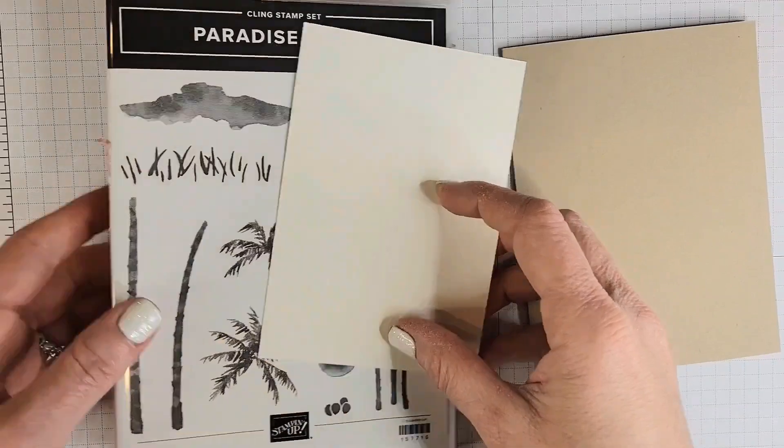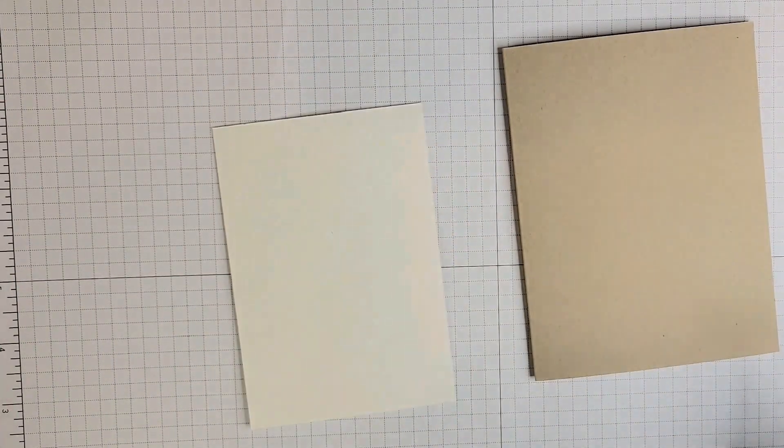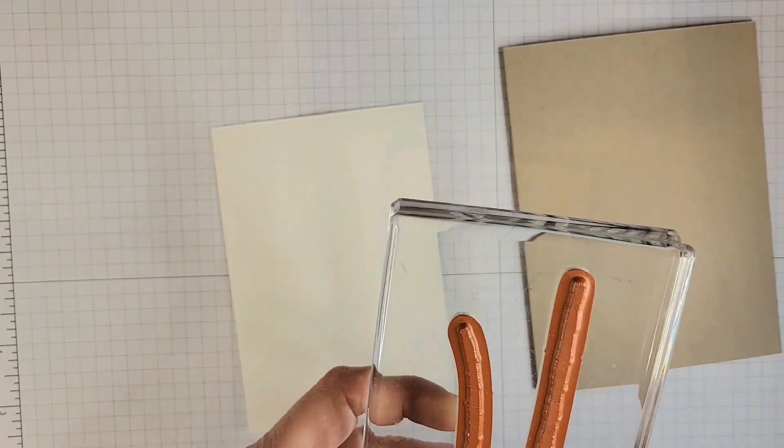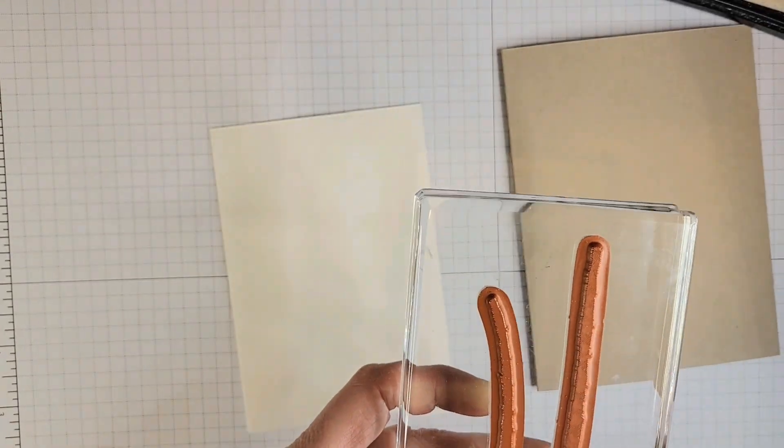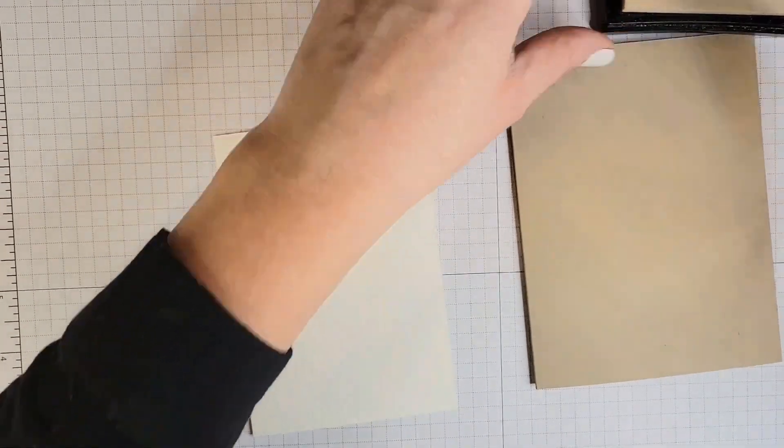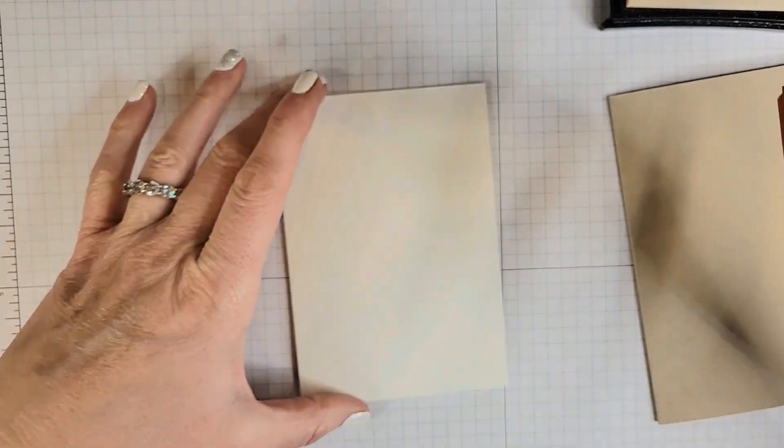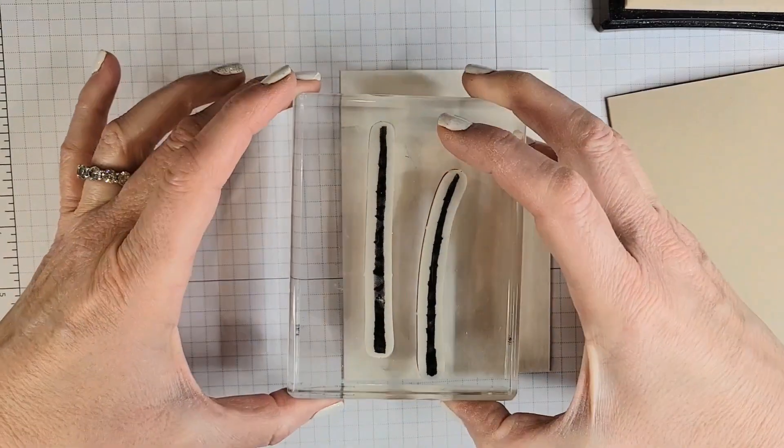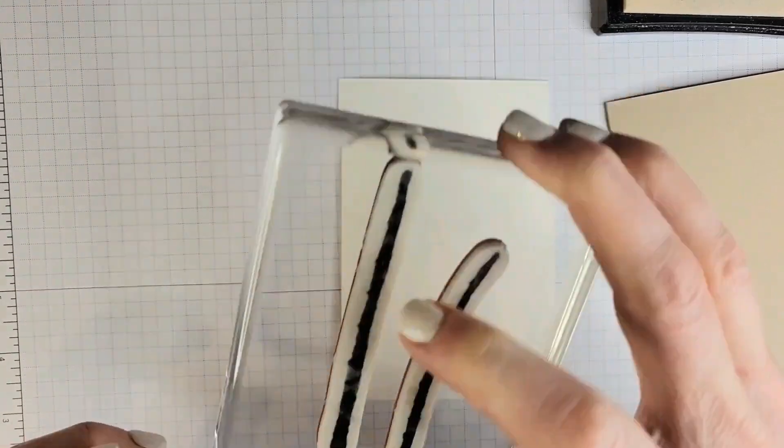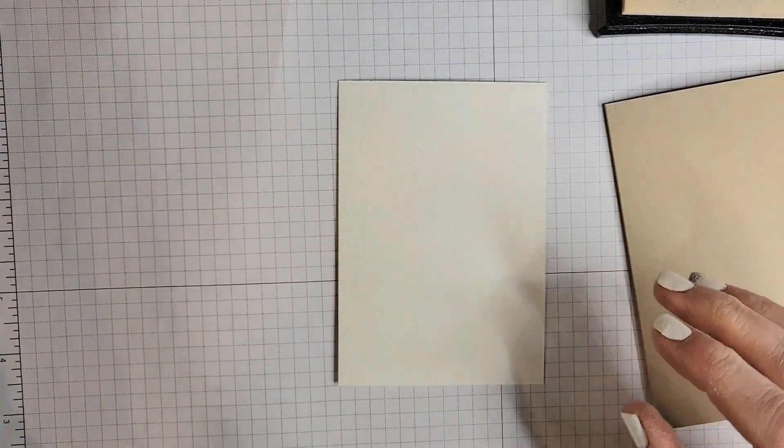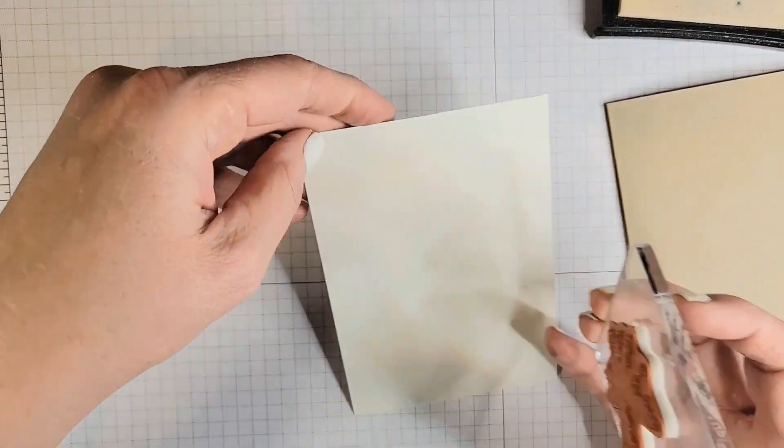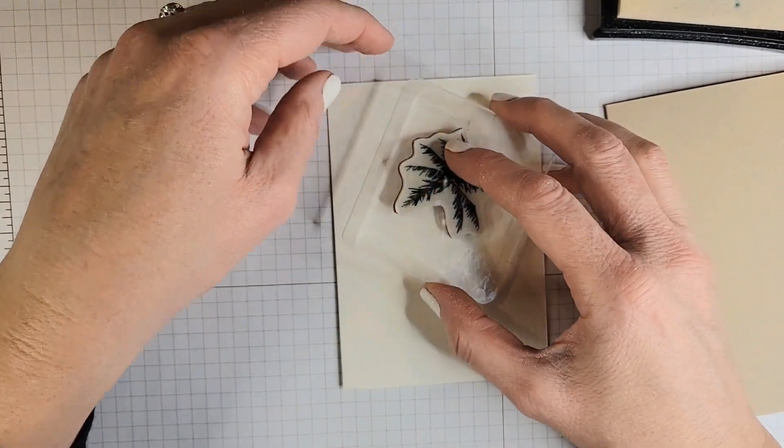So to start off with, we will take the two stems from Paradise Palms and I'm going to emboss them in clear to preserve that image so that when we watercolor it will still look like a palm tree behind it. So now both images of the leaves.